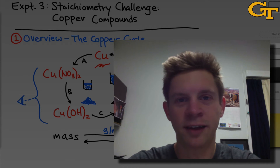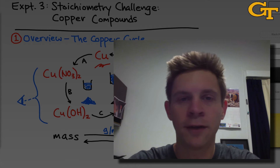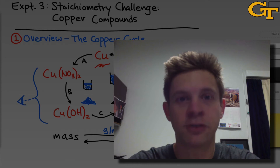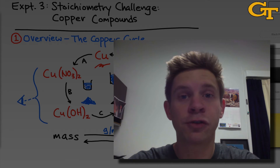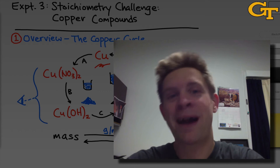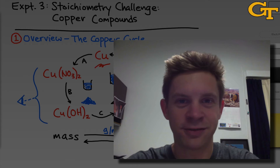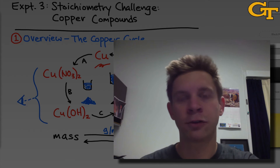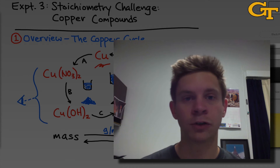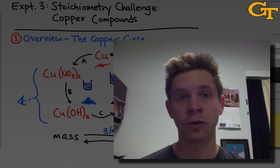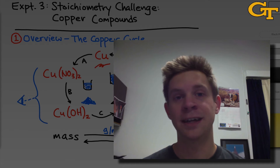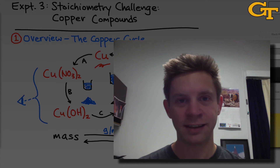Experiment 3 in Chem 12-11 is titled Stoichiometry Challenge Copper Compounds. The goal of this experiment is to carry out a series of reactions involving copper metal and copper 2, eventually going all the way from copper metal back to copper metal through a series of 5 reactions. For each reaction, we'll plan using the tools of stoichiometry to ensure that reactants are added in the right ratios, and we'll evaluate percent yield once we get back to copper at the end of the process.